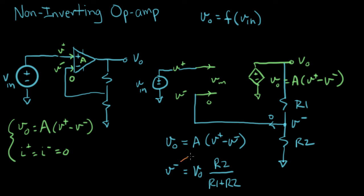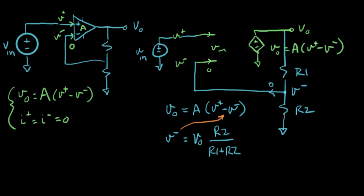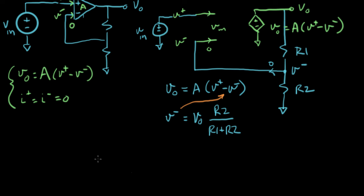Okay, so what I'm going to do next is take this expression and stuff it right in there. Let's do that. Now I can say that V out equals A times V plus minus V out times R2 over R1 plus R2. All right, so far so good. Let's keep going.